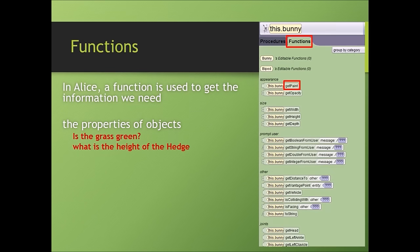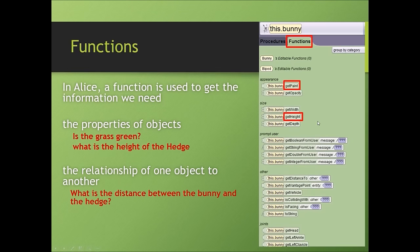If we need the information about what is the height of the hedge, we can use the get height function. Sometimes we need information about the relationship of one object to another, such as what is the distance between the bunny and the hedge. We can use a function get distance to.